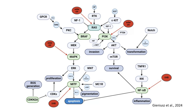To the right of RAS, you can see the PI3K pathway. This is activated through similar upstream signals, leading to AKT and mTOR activation. Together, they promote survival and transformation of melanoma cells. PTEN, a tumor suppressor, acts as a checkpoint, but it is often down-regulated in melanoma.